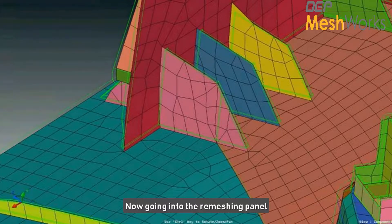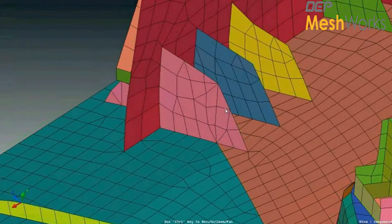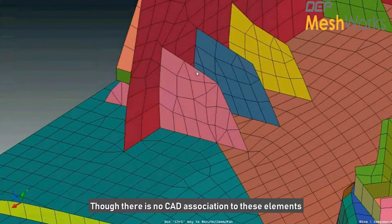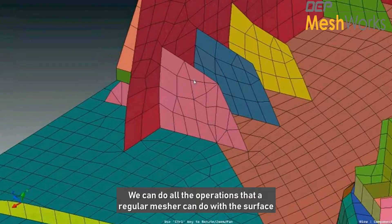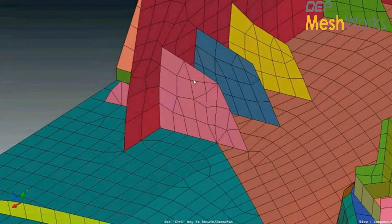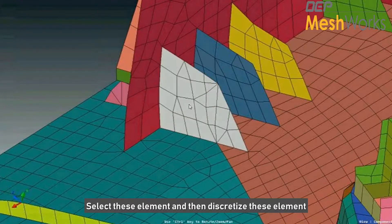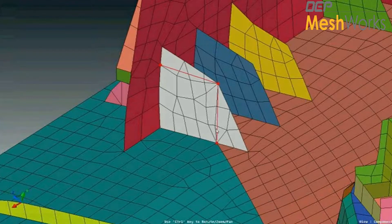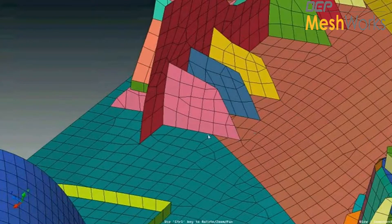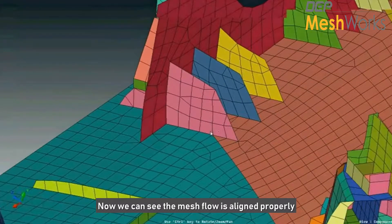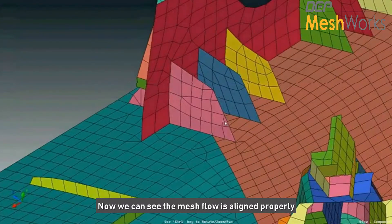So for that, I can quickly go into the remeshing panel. Even though the elements have no CAD associated with them, we can do all the operations that the regular mesher can do with the surface. I can just select these elements and then discretize these elements so that I can get a good mesh flow. And say execute, and as you can see, the mesh flow has been aligned in a proper direction.